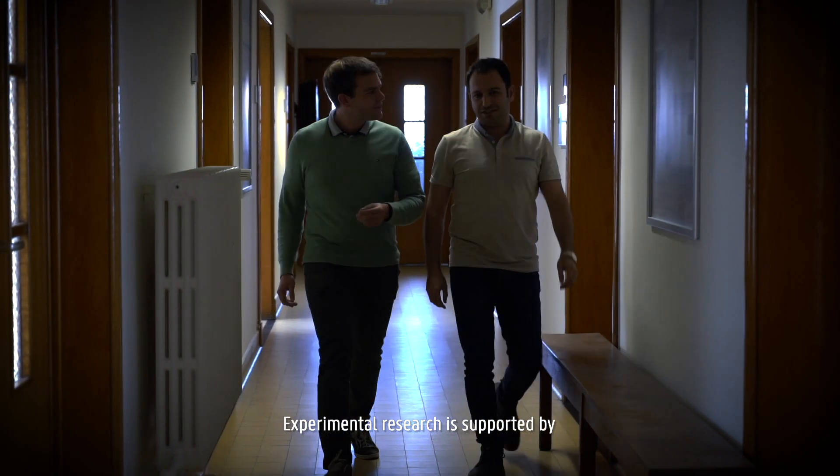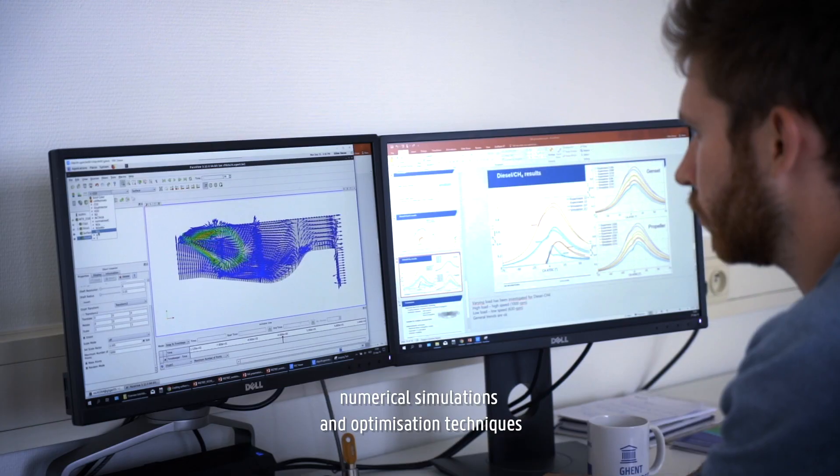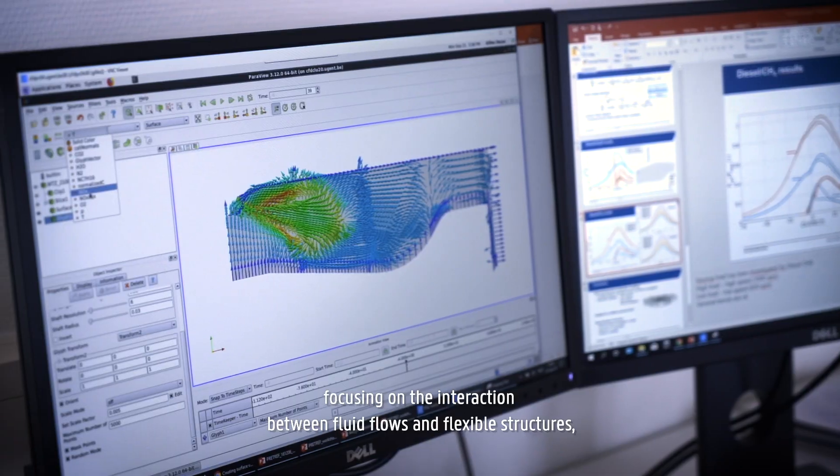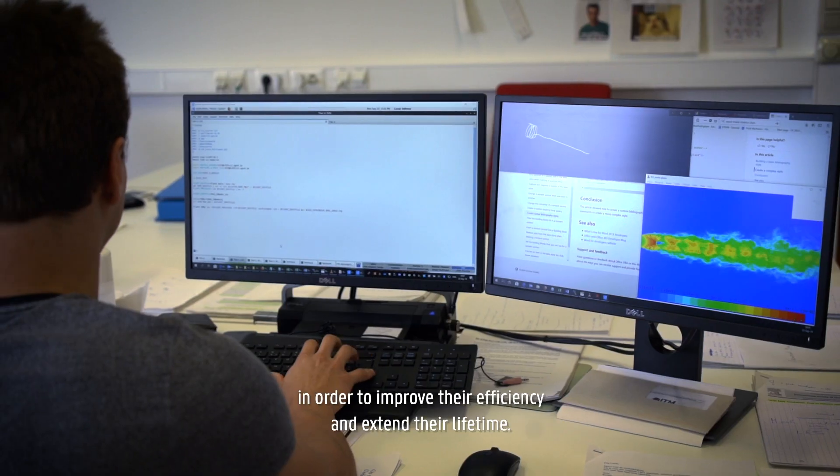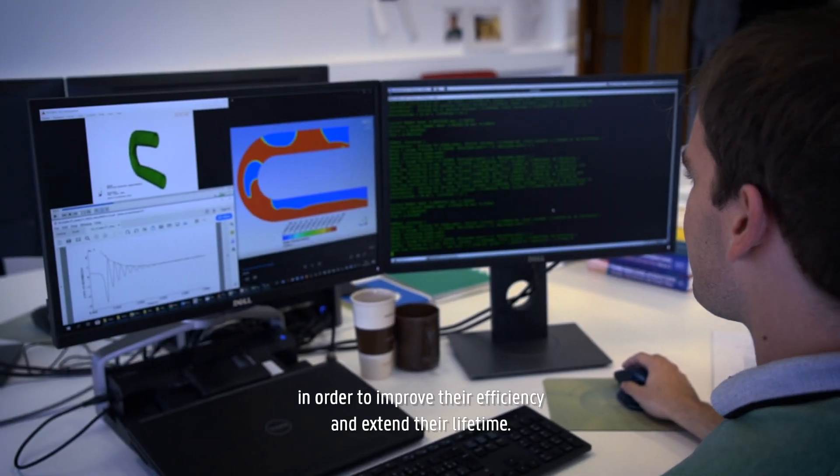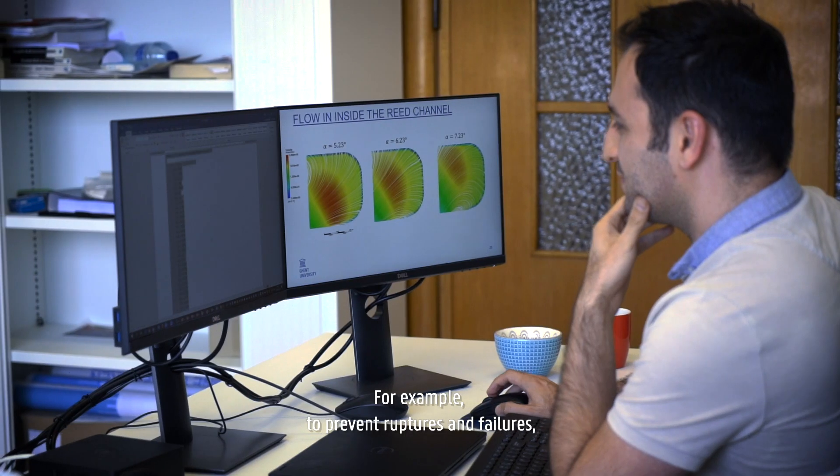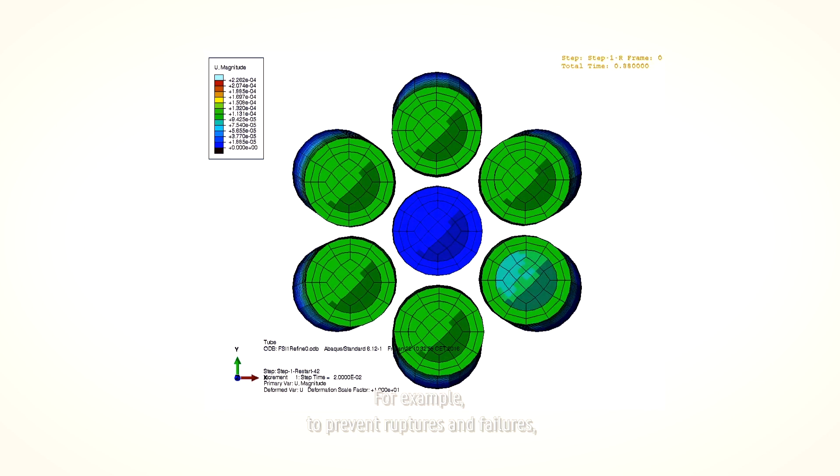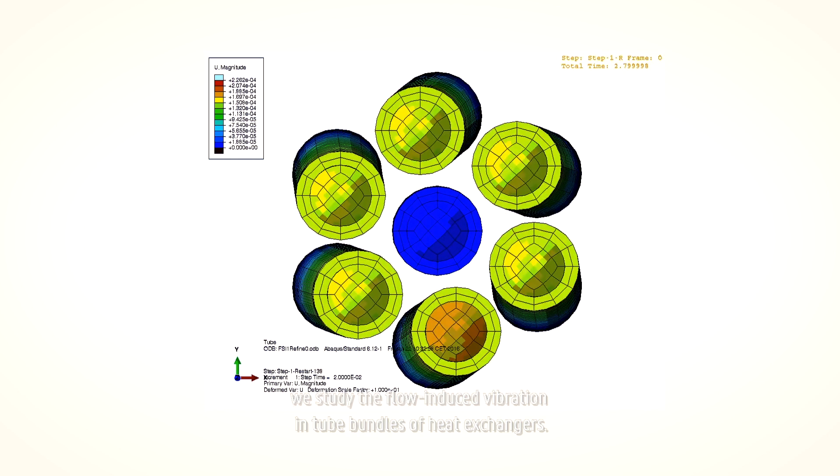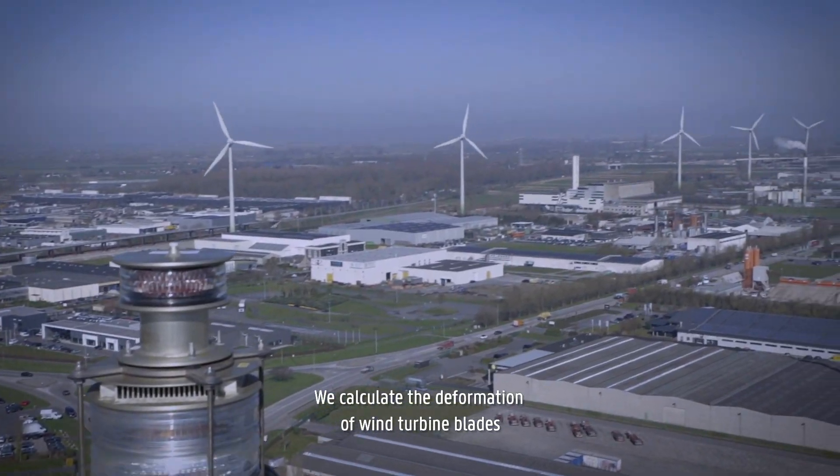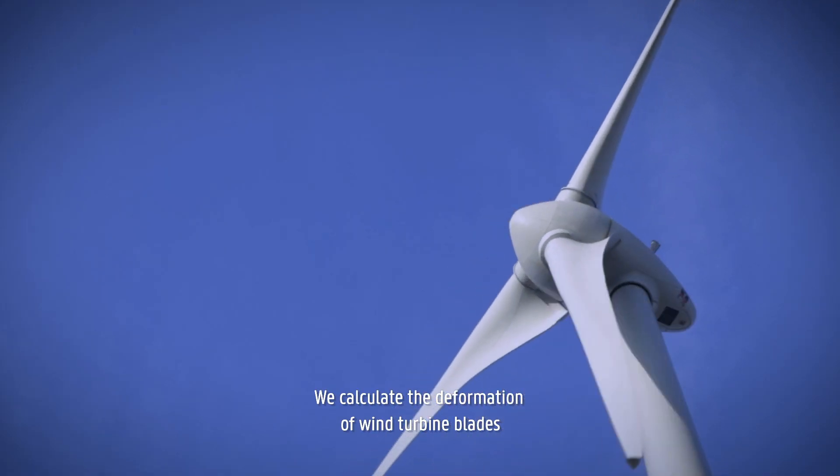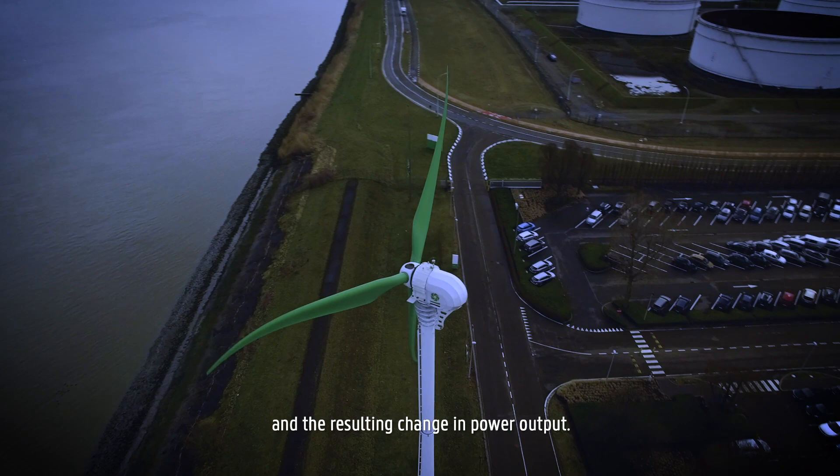Experimental research is supported by numerical simulations and optimization techniques focusing on the interaction between fluid flows and flexible structures in order to improve their efficiency and extend their lifetime. For example, to prevent ruptures and failures, we study the flow-induced vibration in tube bundles of heat exchangers. We calculate the deformation of wind turbine blades and the resulting change in power output.